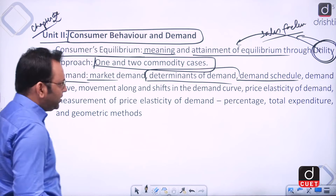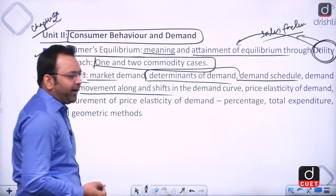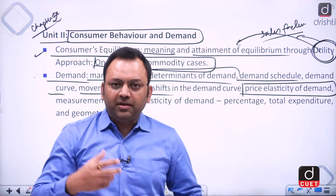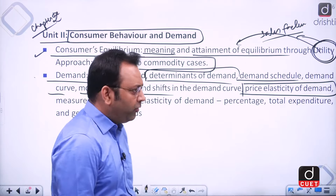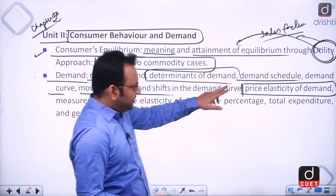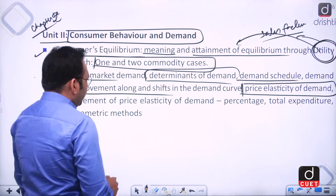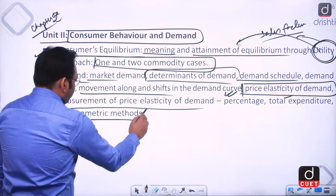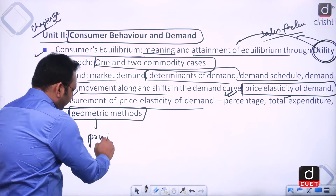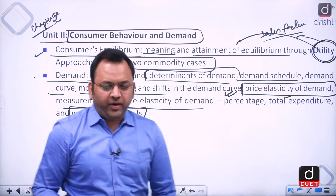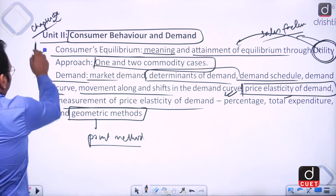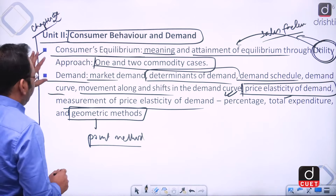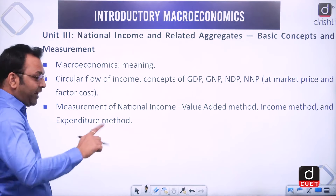We will cover price elasticity of demand — how demand changes when price changes. This elasticity can be measured by three methods: the percentage method, the total expenditure method, and the geometric or point method. This brings us to the end of unit two, covering consumer behavior and demand from class 12th NCERT microeconomics chapter two.